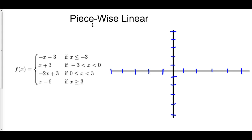So what does a piecewise function mean? Piecewise is kind of like Frankenstein. Frankenstein was built out of a bunch of different parts of humans. And this piecewise function is built out of a bunch of different parts of functions. That's one way to think about it. And we sew all of these functions together to create a monster.